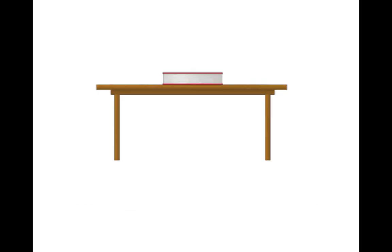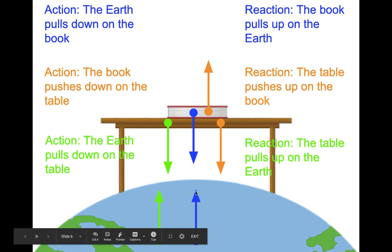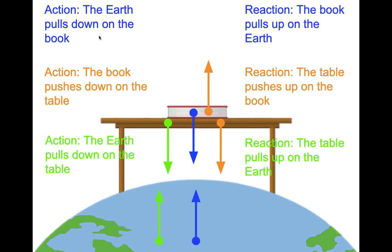Think about a book just sitting on a table — a very simple scenario. Let's look at all the action-reaction pairs happening here. The action: gravity — the Earth pulls down on the book. The reaction is not the normal force on the book, because that force is also on the book, and action-reaction pairs must be on different objects. So the reaction is the book pulls up on the Earth. To find the reaction, we flip the nouns and change the direction: Earth pulls down on book → book pulls up on Earth.